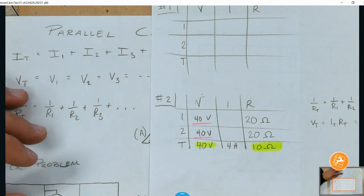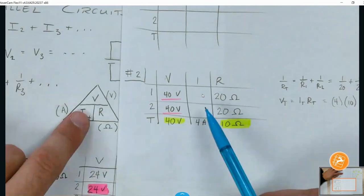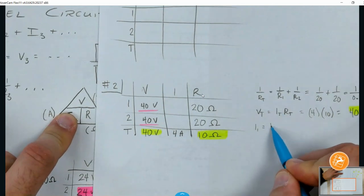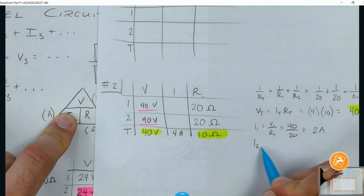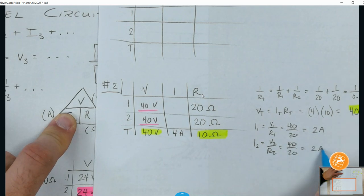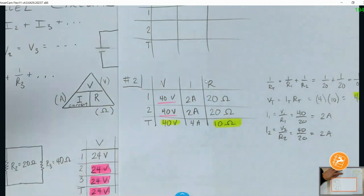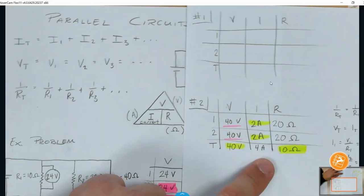Alright, now it's cake. Now we have 2 of the 3 for the missing. So if I want I1, I cover up I, so I have to do V1 divided by R1, which is just 40 over 20, which is 2 amps. And then I2 would be V2 over R2, which would be 40 over 20, which is also 2 amps. And the rule for current, the sum of all the currents have to add up to equal the total. 2 plus 2 equals 4, so we are all good.